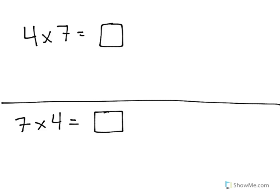Let's start with 4 times 7. Now, 4 times 7 means that we have 4 groups with 7 in each group.